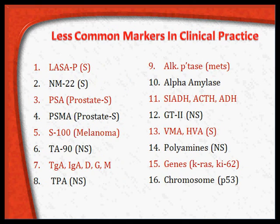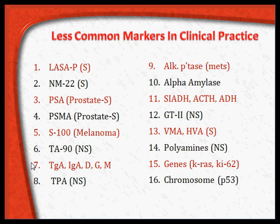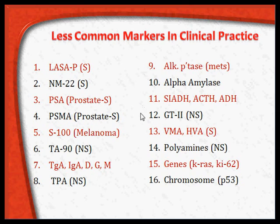Other markers include NMP22, PSA (prostate-specific antigen) — very commonly used — and PSMA, both highly specific for prostate cancer. S100 is used in melanoma. TA-90 is a non-specific breast cancer marker. TPA, alkaline phosphatase in metastasis, alpha amylase in pancreatic cancers, SIADH, and ADH are also listed.